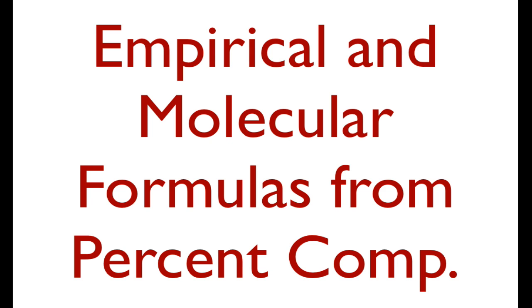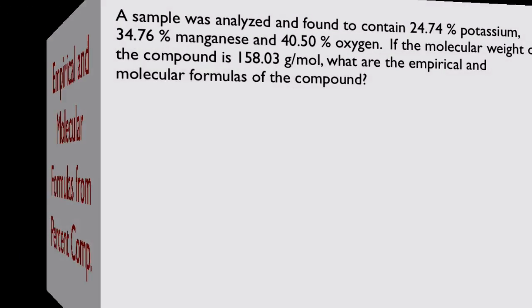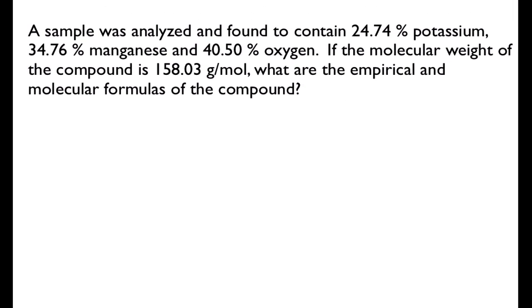In this video I'm going to show you how to determine the empirical and molecular formulas from percent composition data. We have a sample that's been analyzed and found to contain 24.74% potassium, 34.76% manganese, and 40.50% oxygen. We've also been told that the molecular weight of the compound is 158.03 grams per mole, and they want to know the empirical and the molecular formulas for the compound.